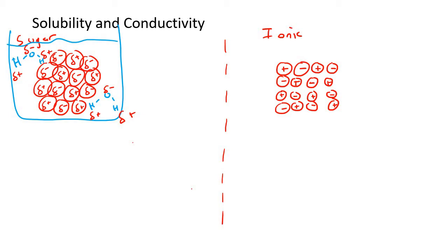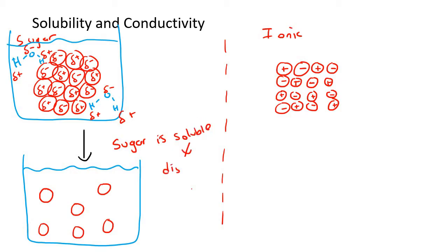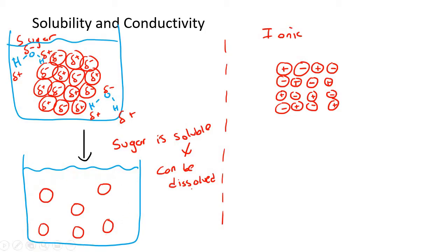So what happens is that these water molecules are going to be able to dissolve sugar. Sugar dissolves really nicely in water. If you take a glass of water and throw a little bit of sugar in and mix it up, you'll see that the sugar gets completely dissolved. You eventually end up with all these little individual sugar particles. So what we can say is that sugar is soluble. When something is soluble, it means that it can be dissolved - it can be broken up.